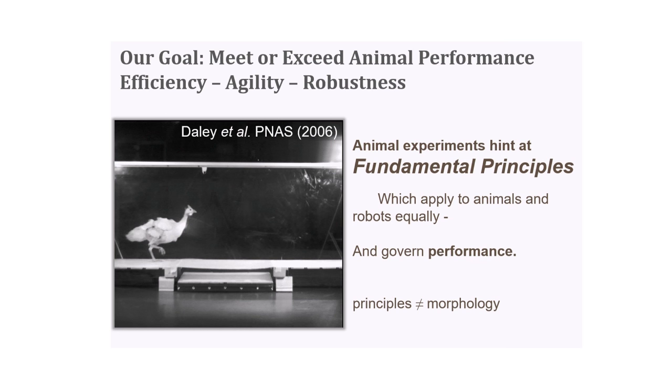When we look at animals to understand these things, we're not looking at a specific animal — we're looking at all animals. We're trying to find trends, universal truths, things consistent among all types of animals. Birds happen to be very good at running and can be tested in the laboratory well. If we can understand the fundamental principles that work for ghost crabs, horses, humans, guinea fowl, and ostriches, those principles are going to apply equally to robots.